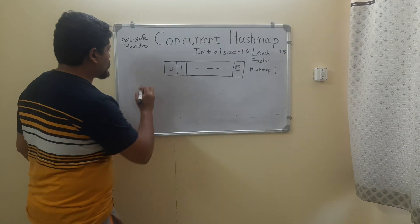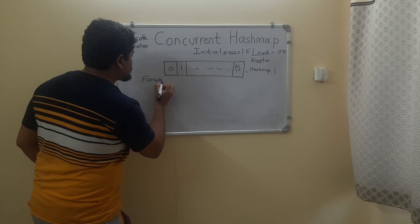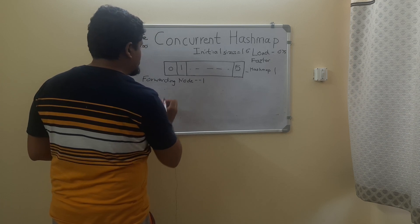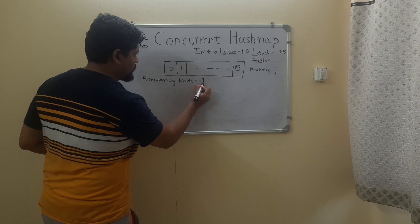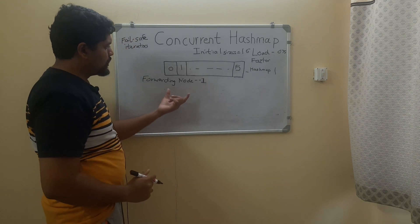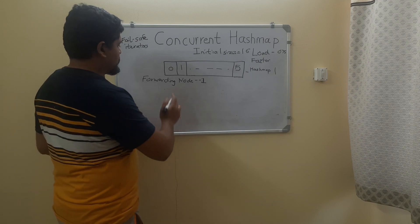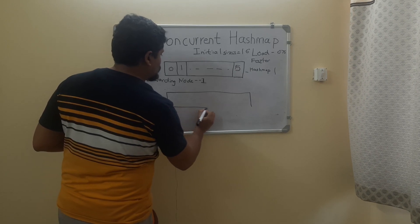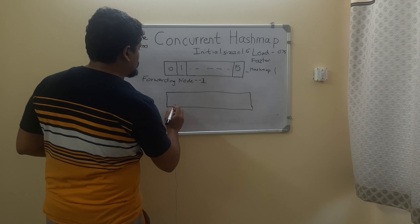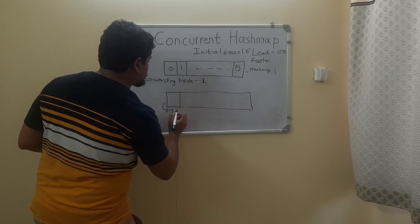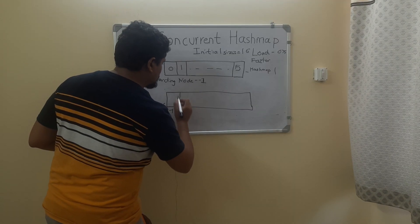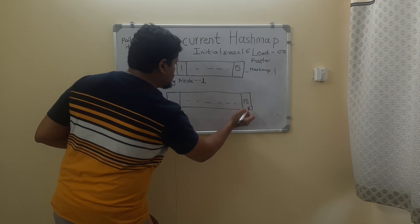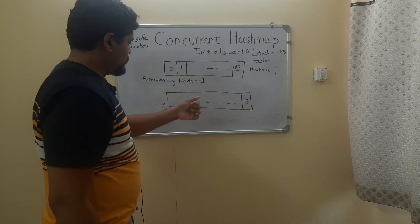When resizing, ConcurrentHashMap maintains a special node called the forwarding node, which contains a value of minus 1. When this minus 1 value occurs, it signals that another list needs to be included in the table. This minus 1 acts as a pointer or reference value to point to the next node. It will copy the base node and store the next series of values into a new linked list of 16 nodes.